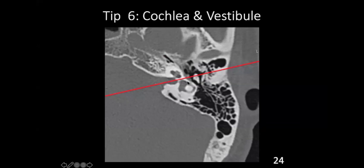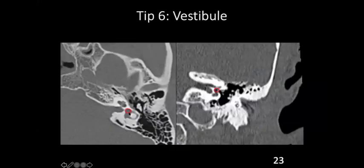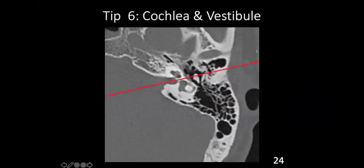Even on a coronal section, you can see: this is the vestibule in the center, this is the semicircular canal, and this is the cochlea. On a coronal section, vestibule is in the center, semicircular canals are in the upper part, and cochlea is in the lower part. Cochlea is below and semicircular canals are above — vestibule is in the center. That you should remember.